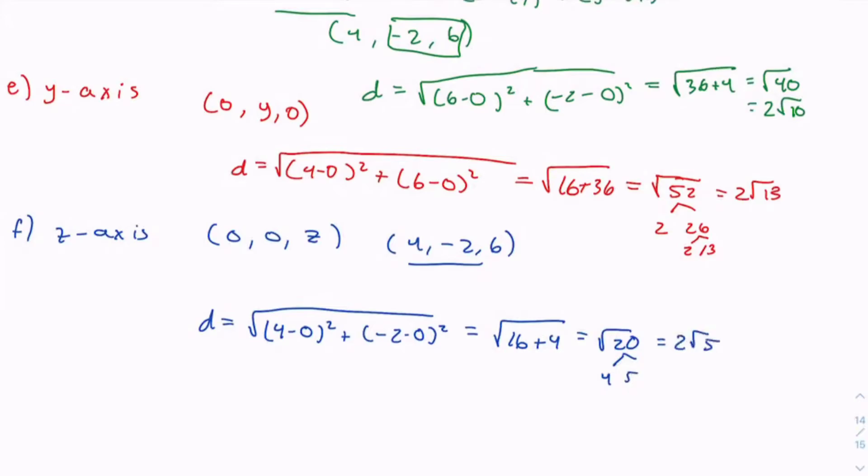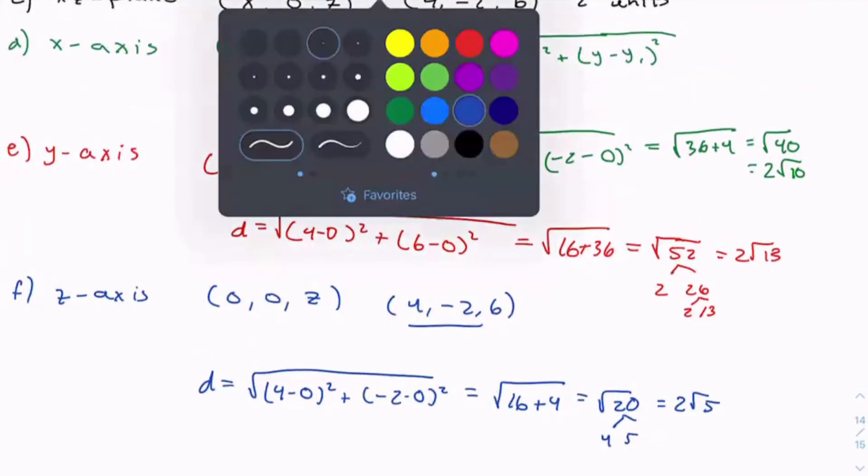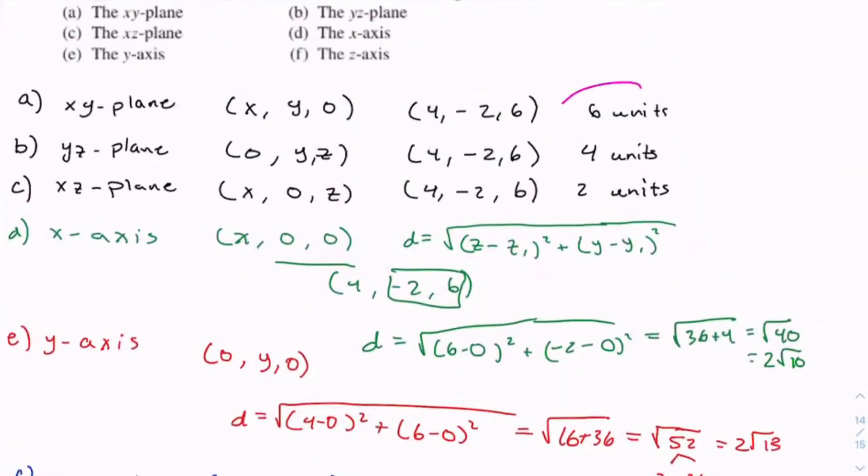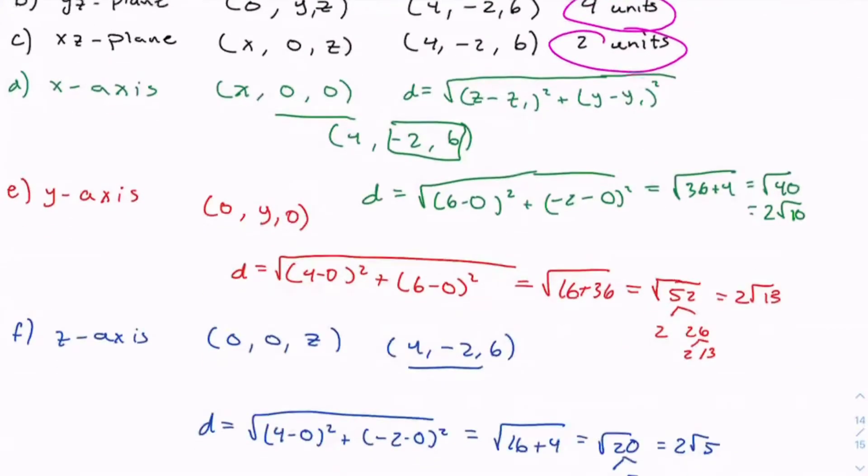So these are all six distances: 6 for a, 4 for b, 2 for c, 2√10 for d, 2√13 for e, and 2√5 for f.